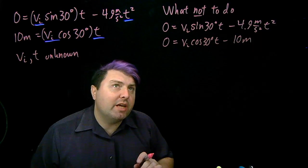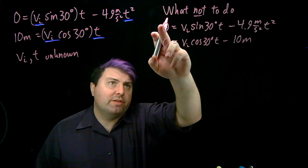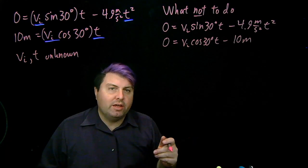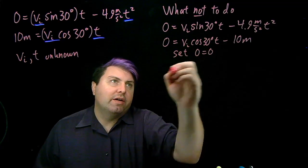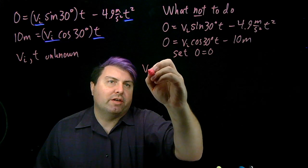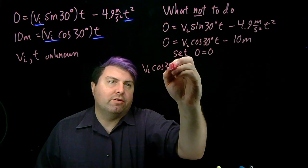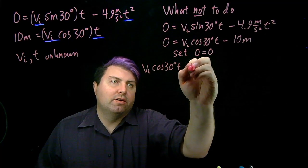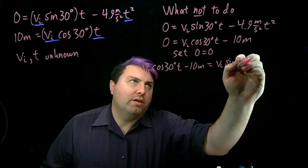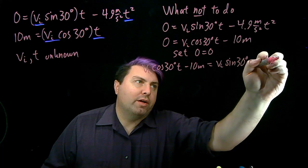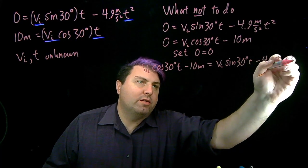And then what we could say is, well, this is equal to zero, this is equal to zero. So set them both equal to each other, right? Set zero equal to zero. And then what we would get from this is we would get vi cos 30° t - 10m = vi sin 30° t - 4.9 m/s² t².